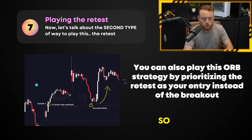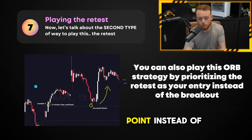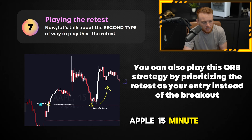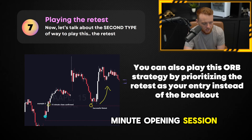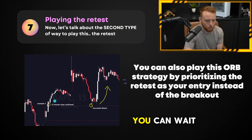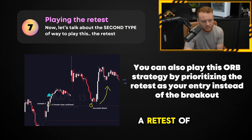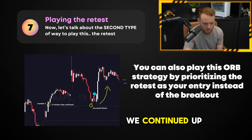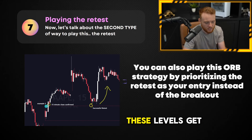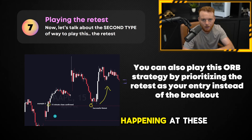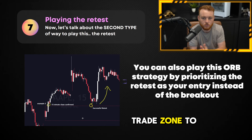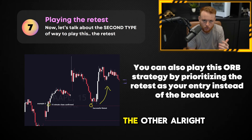Another way you can play this strategy is to play the retest of that opening range breakout, prioritizing the retest as your entry point instead of the simple breakout — which is a lot more risky. Looking at this Apple 15-minute chart, we have the 15-minute opening session candlestick with the high and low marked. Instead of playing longs off the breakout, you wait for significant upside and then a retest of that opening range level. A 15-minute close confirmed, price came down, retested it, and continued up. These levels act as support and resistance — you'll see pivot points at these levels all the time.